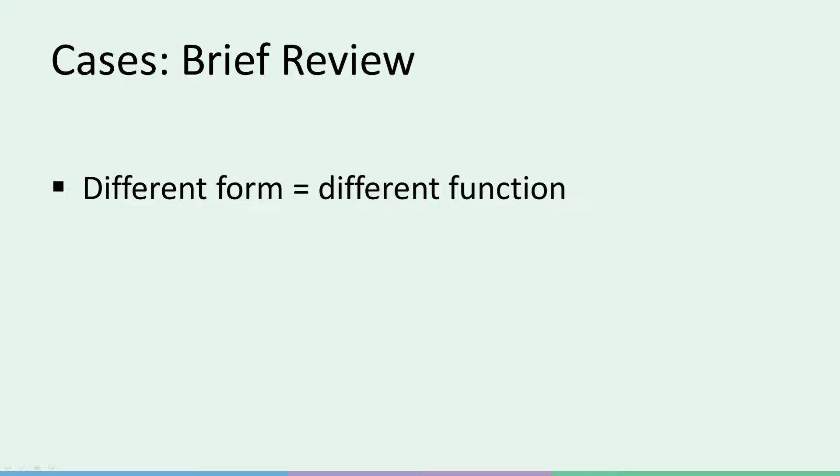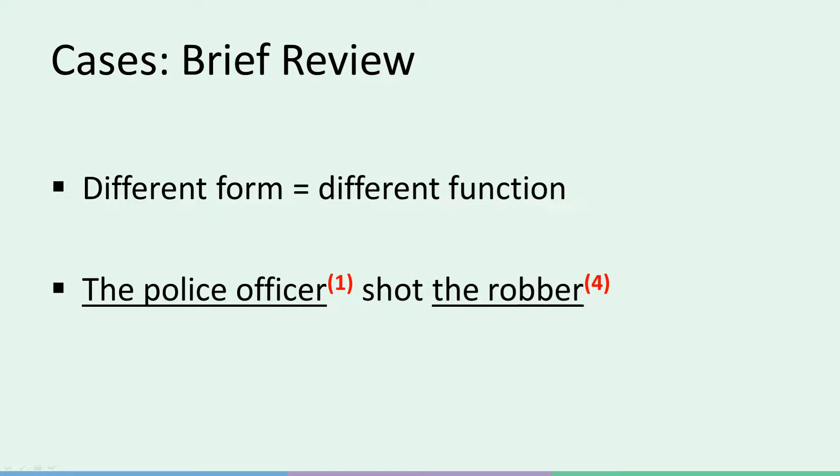First, just a very brief review of cases. When we use the word case, we simply have different forms of the same word in mind. The different forms reflect the different functions the same word can have when put in different contexts. Taking the sentence 'the police officer shot the robber' as an example: the police officer is in case number one, because it's what we call the subject, or the person or thing that acts upon another person or thing to effect a change. The robber is in case number four, because it's what we call the object, which can be a person or thing that the subject acts on that has something happen to it.